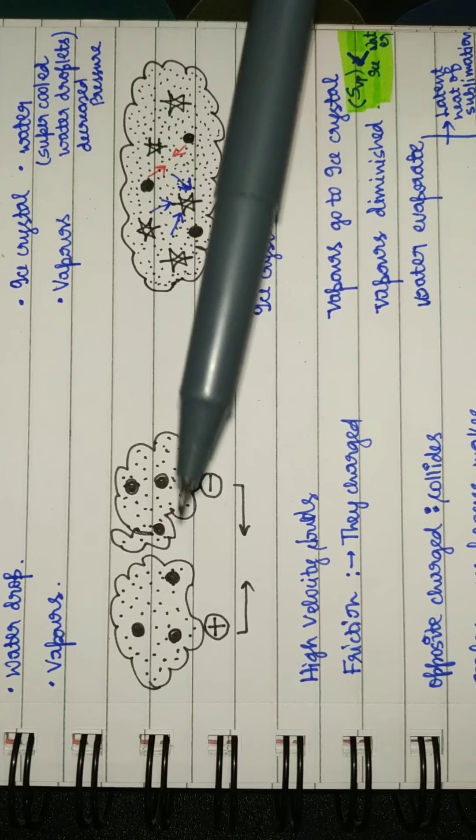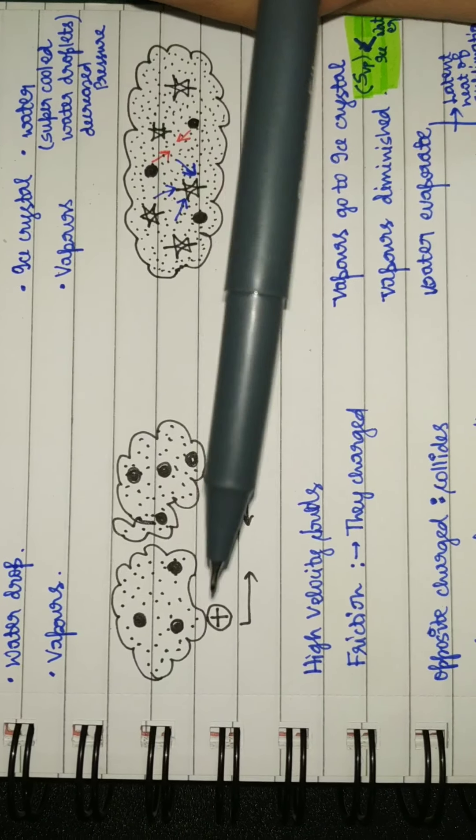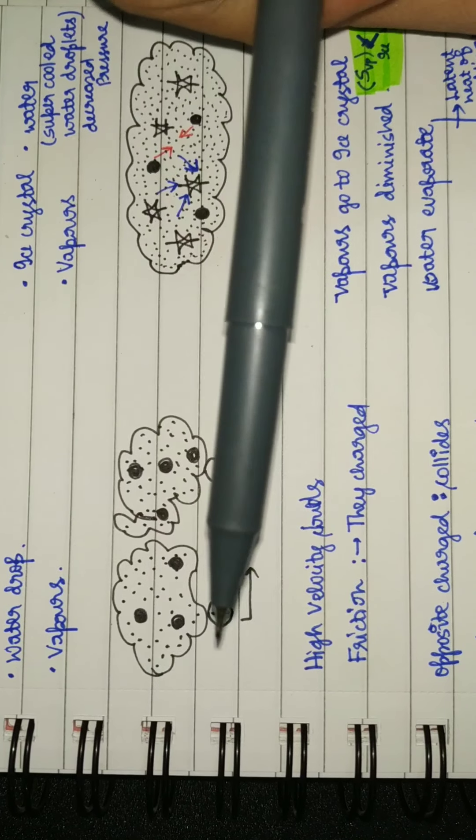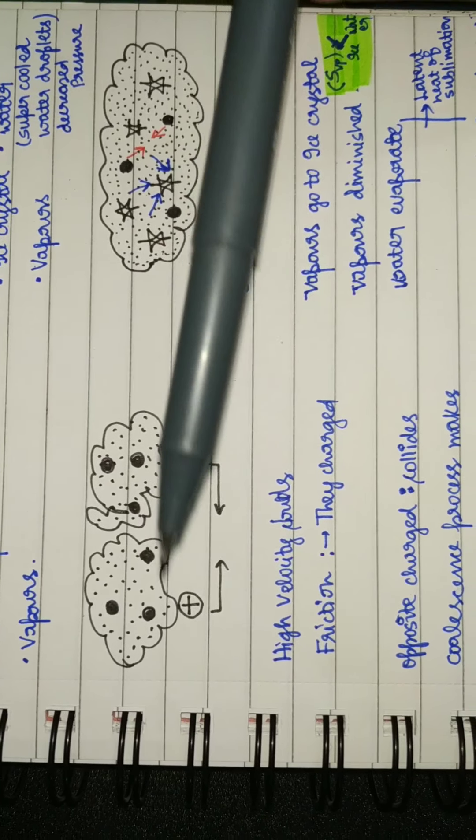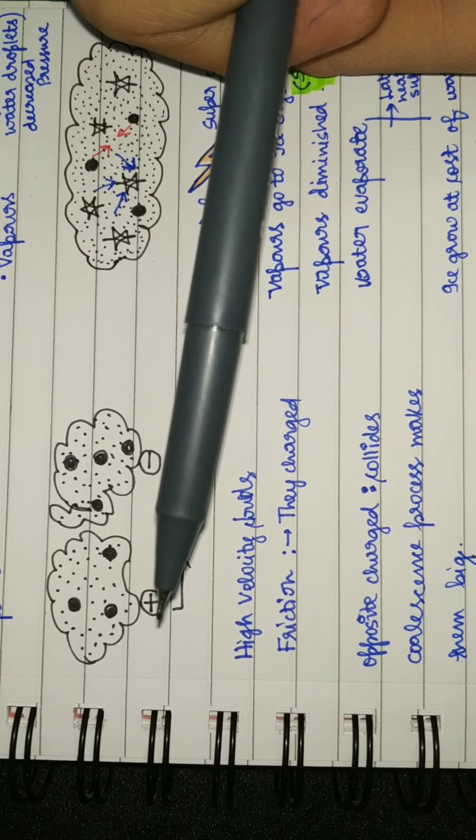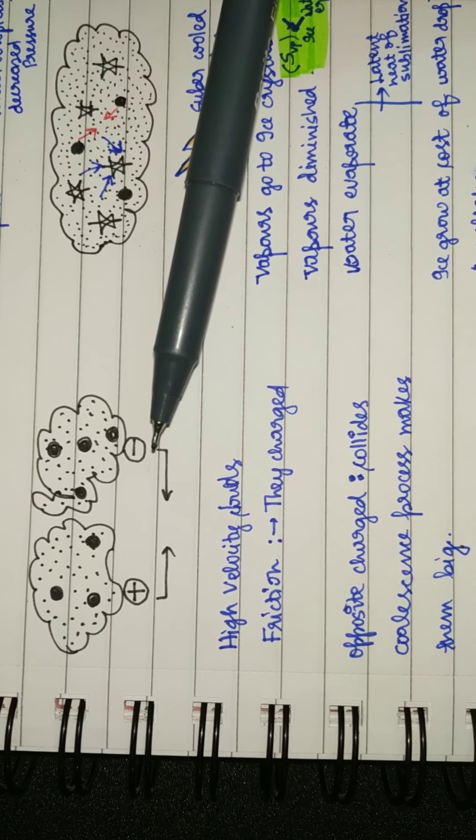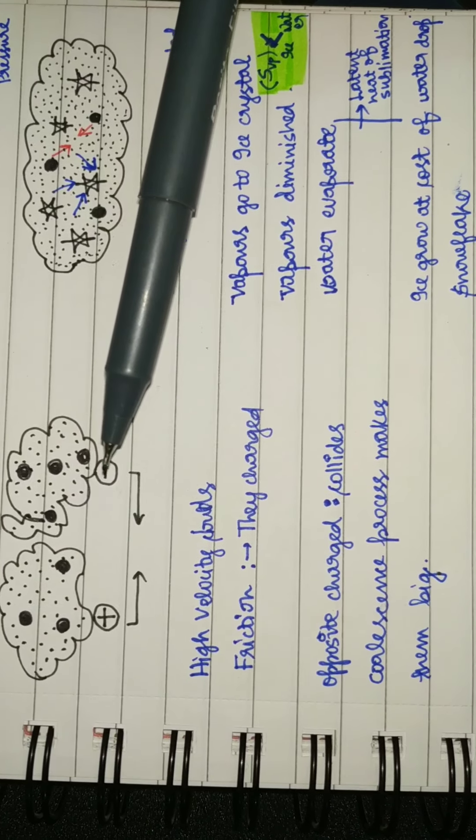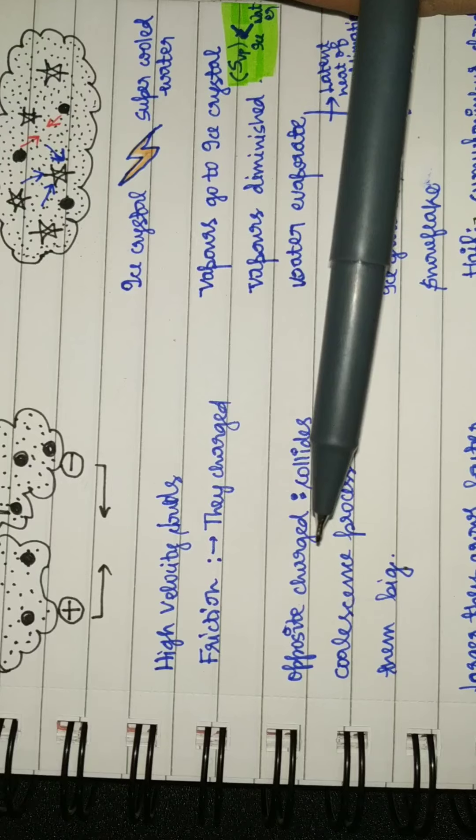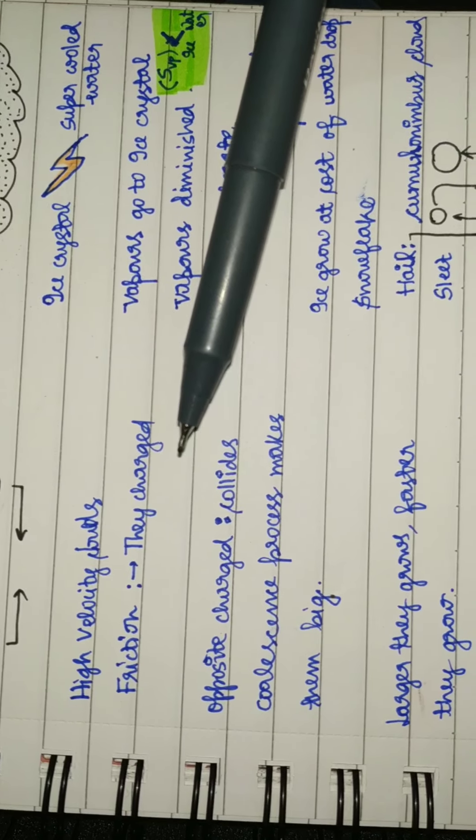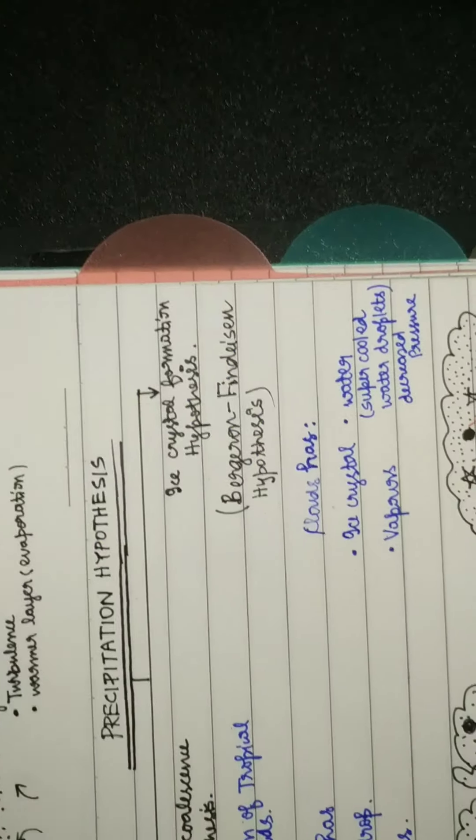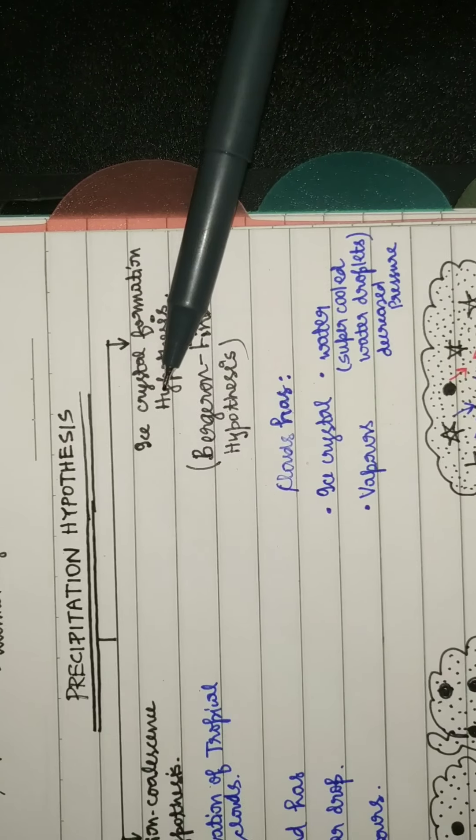The tropical area clouds primarily have water droplets and vapors, so it has a natural limitation that it doesn't include ice crystals. This theory says that clouds, upon rubbing with each other, gain opposite charges. These opposite charges cause them to collide. The water droplets on collision coalesce and form bigger water droplets, and the larger they grow, the faster they grow.